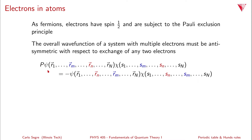For example, if you apply the exchange operator P to a function which has a spatial component psi of R1 through R_N and chi, which is a spin component of S1 through S_N, and we exchange R_m and R_n, we get the negative of the same function. This negative sign is the property of the fermion.